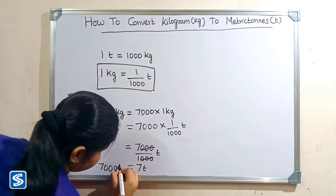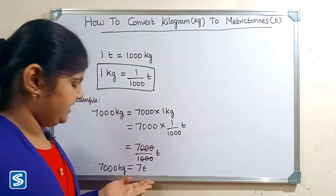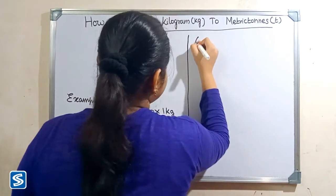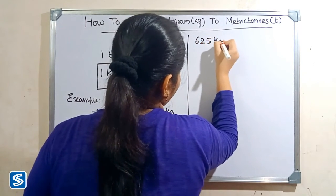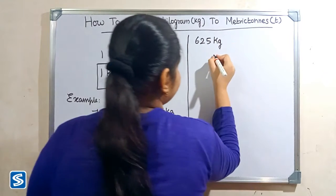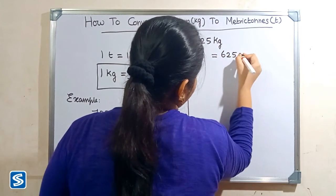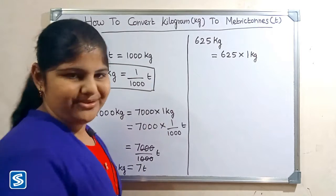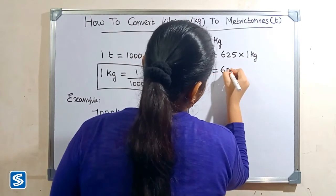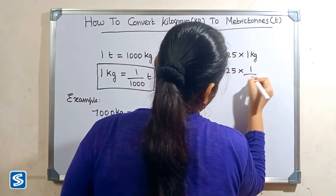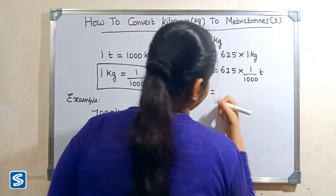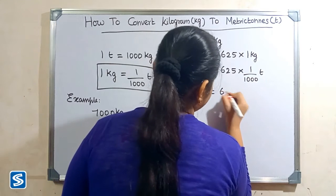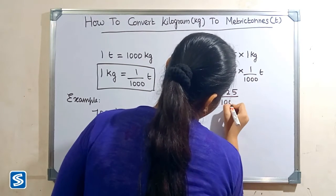So 7000 kilograms is equal to 7 tons. Next we will take another example: 625 kilograms. 625 kilograms can be written as 625 multiplied by 1 kilogram. Now we substitute 1 by 1000 tons in the place of 1 kilogram, so 625 multiplied by 1 by 1000 tons. 625 multiplied by 1 will be 625, so 625 by 1000 tons.